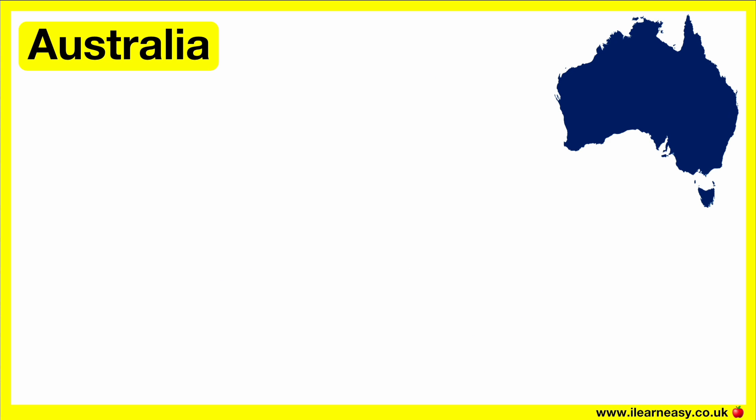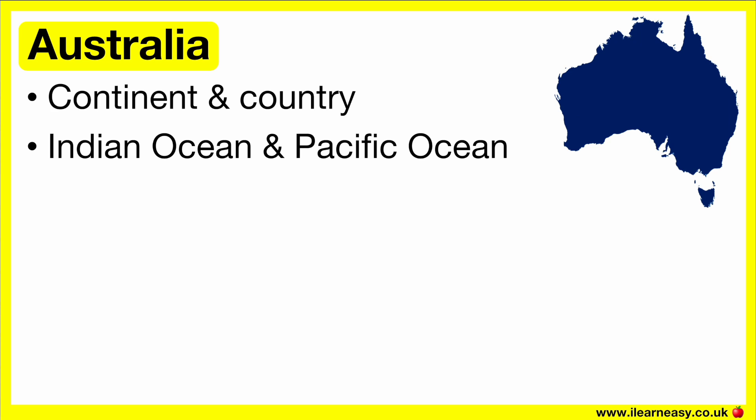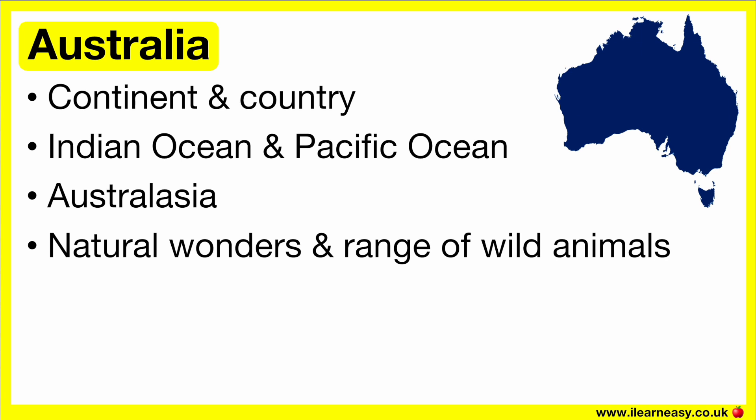Australia is a continent that is also a country. This is because it's the only continent that's occupied by a single country. Australia is surrounded by the Indian Ocean and the Pacific Ocean. Australasia refers to Australia, New Zealand, and other islands in the Pacific Ocean. Australia is known for its natural wonders and range of wild animals.